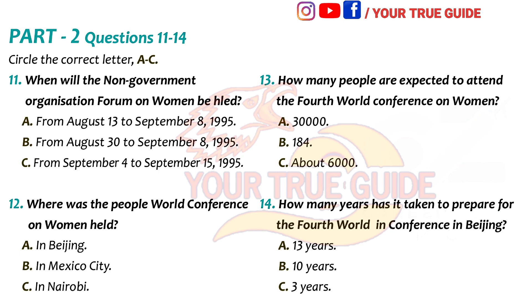There have been three previous World Conferences on Women: first in Mexico City in 1975, second in Copenhagen in 1980, and third was in Nairobi in 1985. During the first conference held in Mexico City in 1975, which was during the International Women's Year, one outcome was the declaration by the UN General Assembly for a Decade for Women, 1976 to 1985.